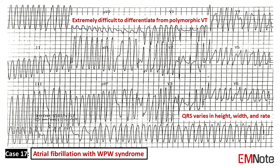The drug indicated to treat stable patients with atrial fibrillation in WPW syndrome is procainamide.